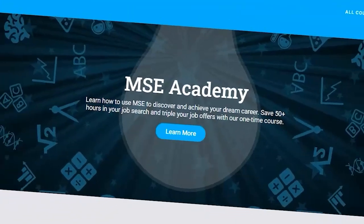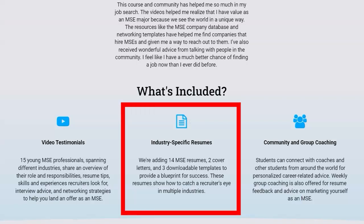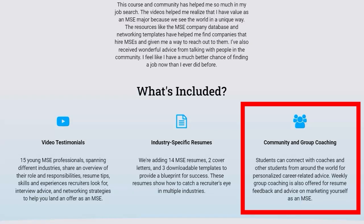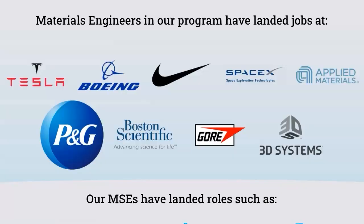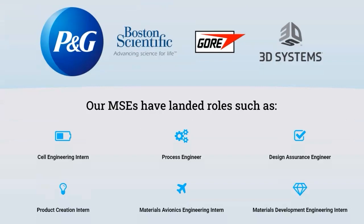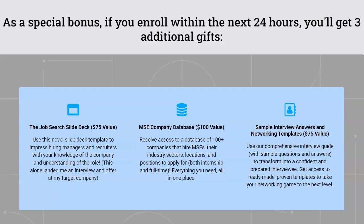As a materials engineer, we can make an impact in nearly every single industry. But with that versatility comes a lot of different options to choose from. So if you have no idea which industry is right for you, believe me, you're not alone. Just imagine narrowing down your ideal role and company by the end of this week — imagine being able to secure your dream job offer without having to apply to hundreds of job openings. Our online course, MSE Academy, includes video testimonials, resumes, interview prep, and mentorship from materials engineers who have been in your shoes. We also connect our members with companies and industry professionals in our expansive network to help accelerate your job search. To learn more and get started, simply click the link in the description below. If you enroll within the next 24 hours, we'll add three bonus career development resources. I hope to see you there.